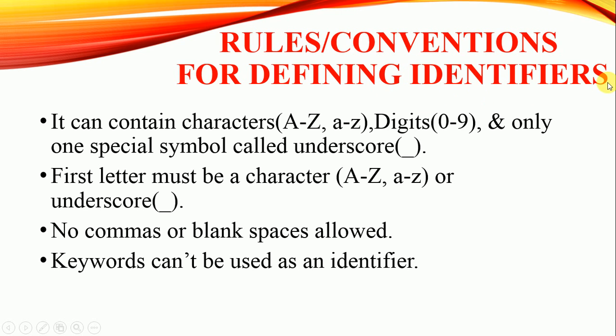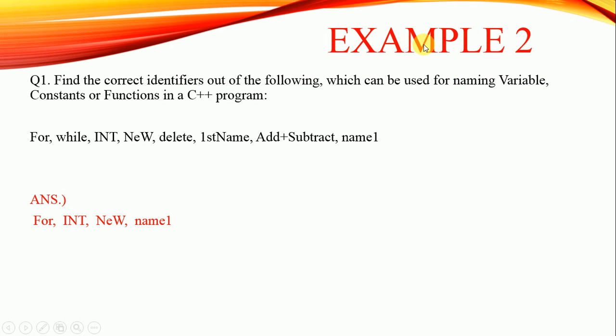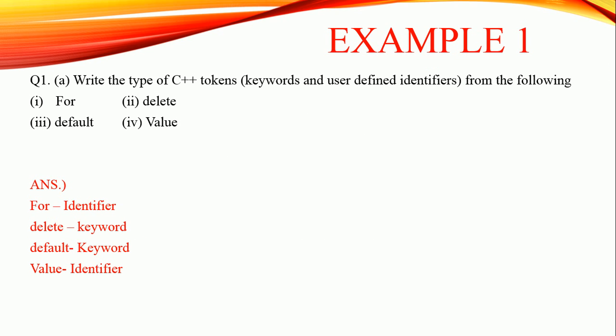Now let's discuss some questions based on this topic. Example 1: Write the type of C++ tokens as keyword and identifier (user-defined identifier) from the following. That means from these four names you have to classify the words into keywords and identifiers.